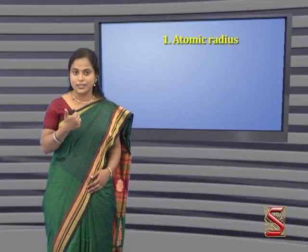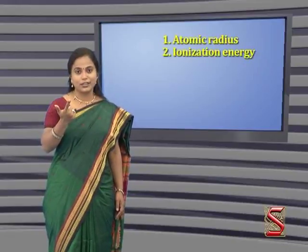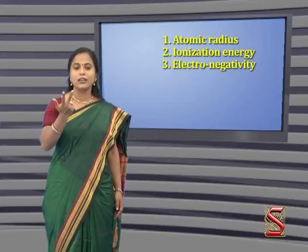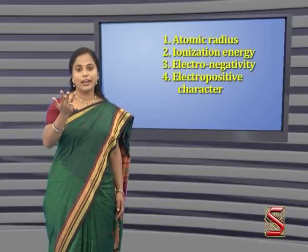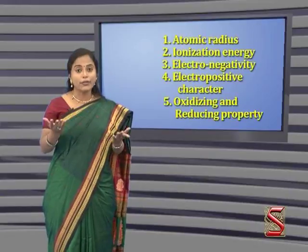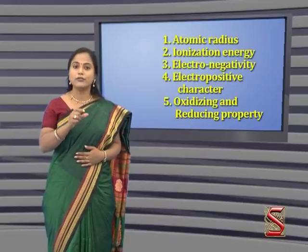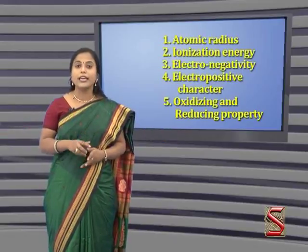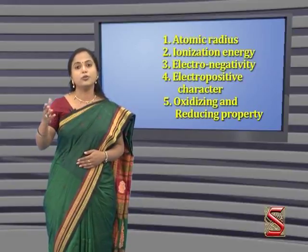Let's move to gradation of properties in a period and group. Atoms have the following properties: atomic radius, ionization energy, electronegativity, electropositive character, and oxidizing and reducing property. Let me explain each of these properties in detail and how each one changes in groups or periods.